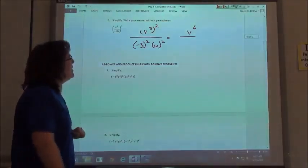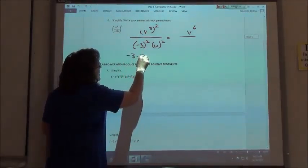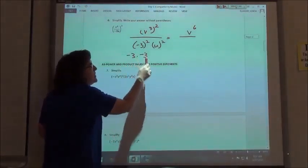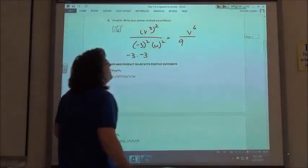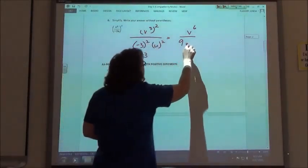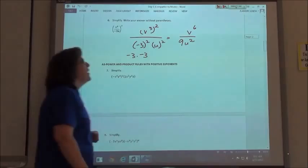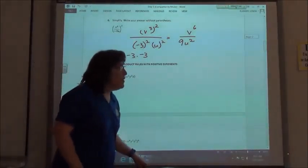On the bottom, negative 3 squared, negative 3 times another negative 3, negative times a negative is a positive 9, and then the u squared is just u squared, so I get v to the sixth over 9 u squared.